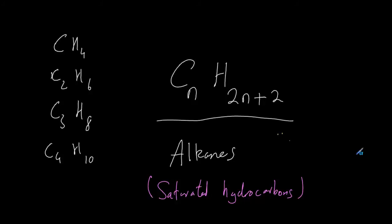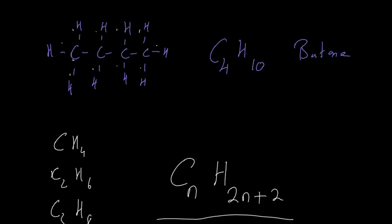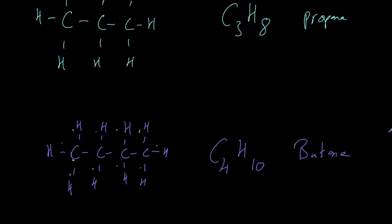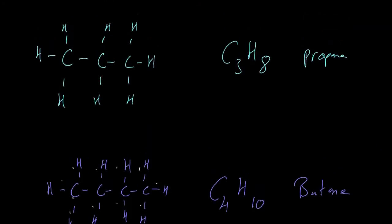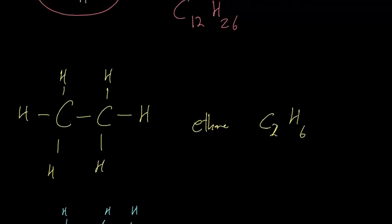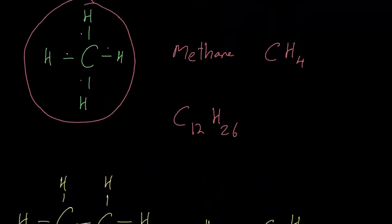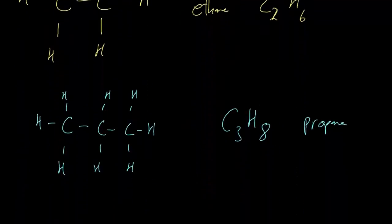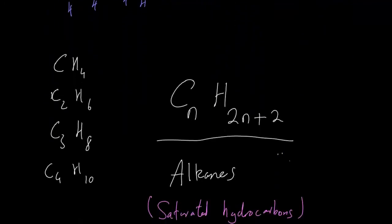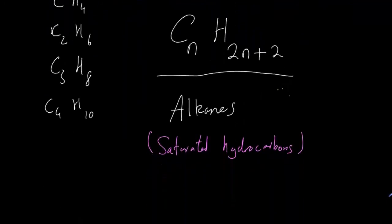If we go back to our diagram of the alkanes, have a look at every single carbon. Every single carbon has four separate bonds. There are no double bonds, and therefore each of these hydrocarbons is an alkane and it is saturated because every carbon is bound to four other things - either three other hydrogens and a carbon, two carbons and two hydrogens, or in the case of methane, four hydrogens.